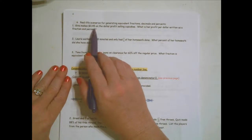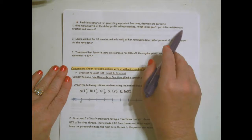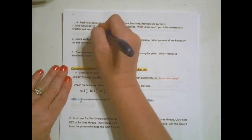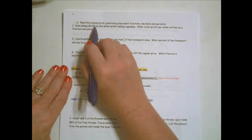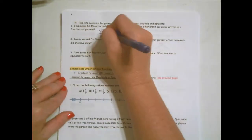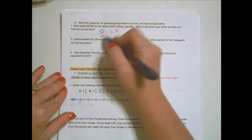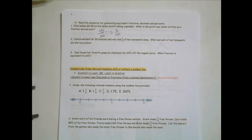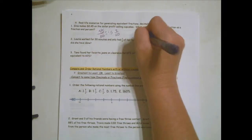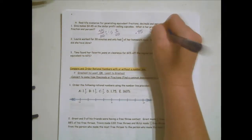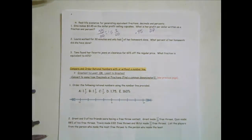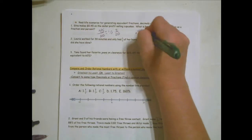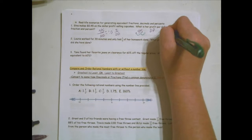Gina makes forty-five cents on the dollar profit selling cupcakes. What is the profit per dollar written as a fraction and a percent? As a fraction, this is forty-five hundredths. I can divide both by five — forty-five divided by five is nine, one hundred divided by five is twenty — so it is nine-twentieths. Written as a percent, I have decimal point forty-five, and using Dr. Pepper I move my decimal two places to get forty-five percent.